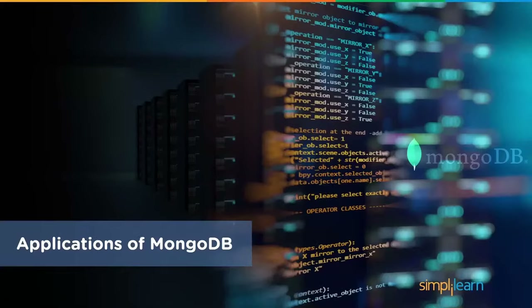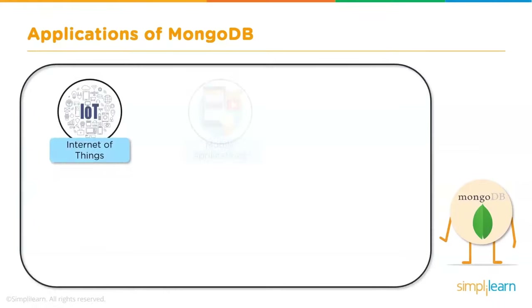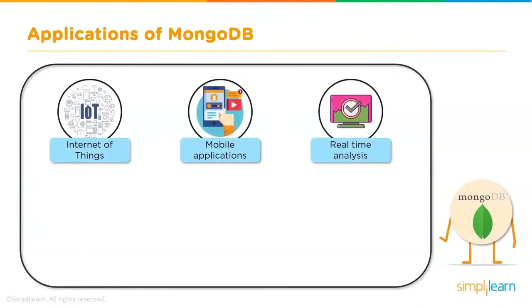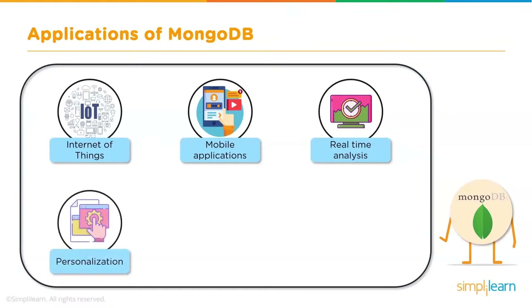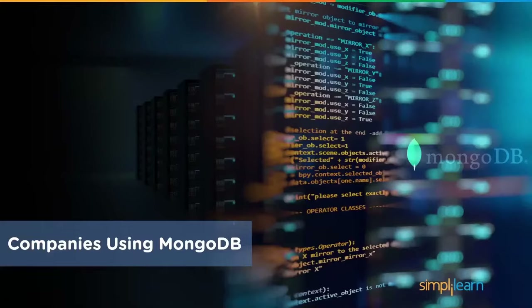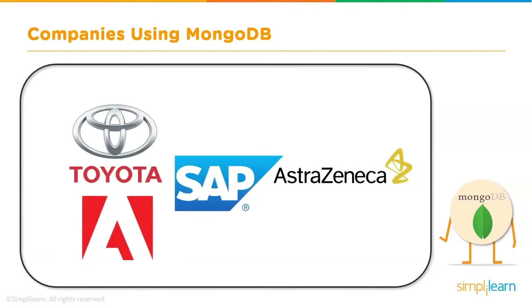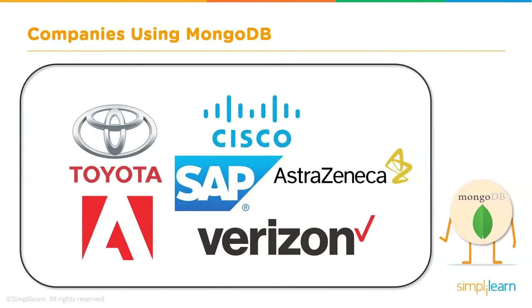MongoDB can be applied in several areas: Internet of Things, mobile applications, real-time analysis, personalization, catalog management, and content management. Companies like Toyota, SAP, AstraZeneca, Adobe, Verizon, Cisco, Barclays, and Google, among others, readily deploy MongoDB as their database management system.